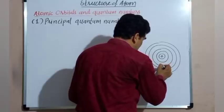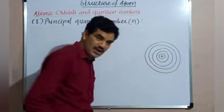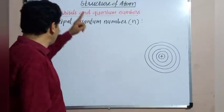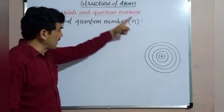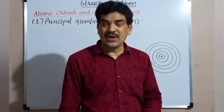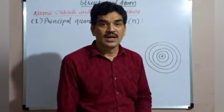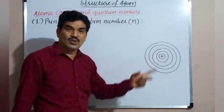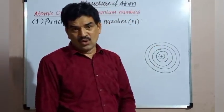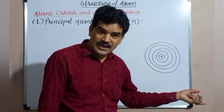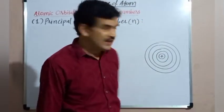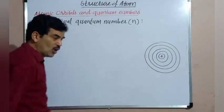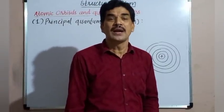Inside the atom there is a nucleus, and around the nucleus there are orbits — circular orbits. The principal quantum number tells us what information about the shell. If we know the value of the principal quantum number for a particular electron, we know which orbit that electron belongs to — which orbit or which shell it belongs to.